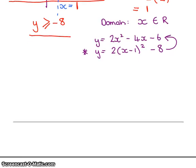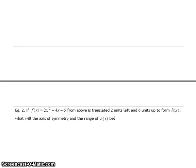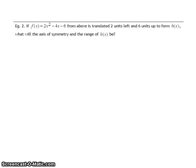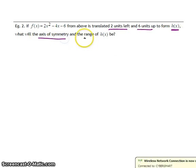Now, if I go down to example 2, example 2 requires us to use this question. It says if y equals 2x squared minus 4x minus 6 from above is translated 2 units left and 6 units up to form a new graph, which they've decided to call h, what will the axis of symmetry and what will the range be?